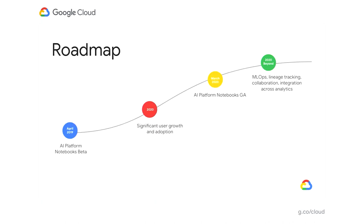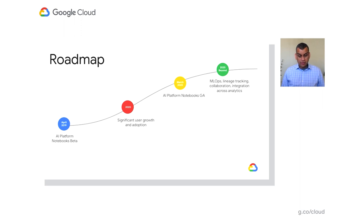Looking ahead at our roadmap extending beyond 2020, it's worth looking back on where we came from. We launched AI Platform Notebooks in beta in April 2019, and since launch we've seen tremendous interest among enterprises for developing models using Cloud AI Notebooks. We've seen significant user growth and adoption in the last year that helped us successfully GA the product in March 2020. Beyond 2020, we hope to build in features around machine learning operations, lineage tracking, collaboration, and integration across our entire analytics estate.